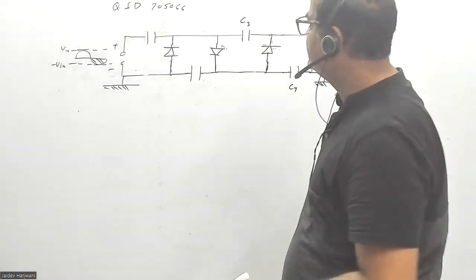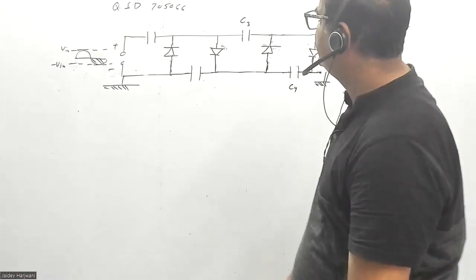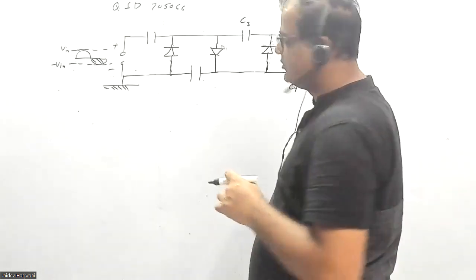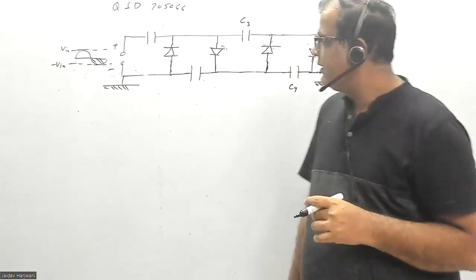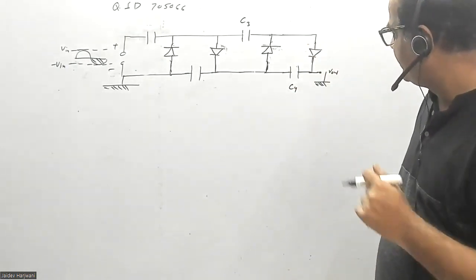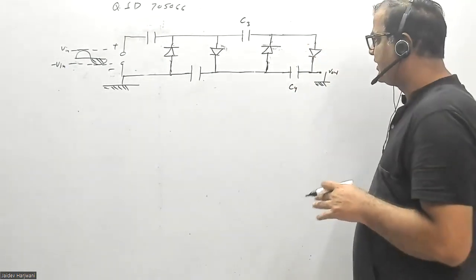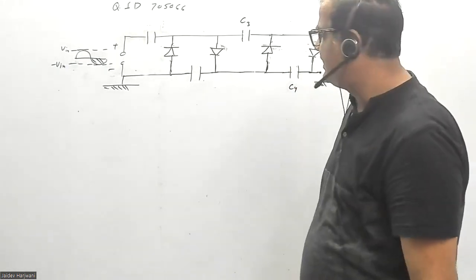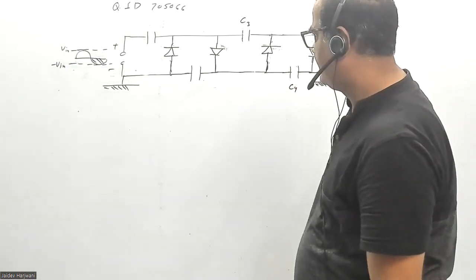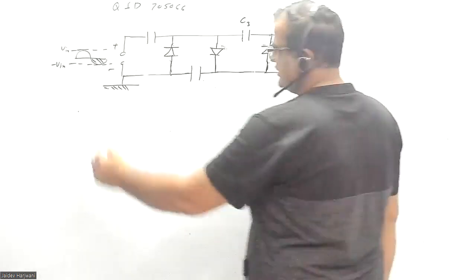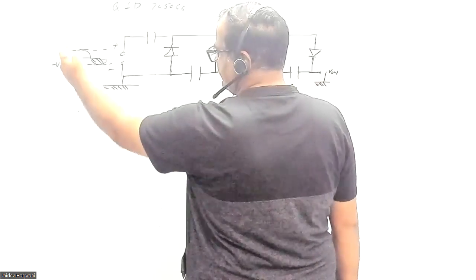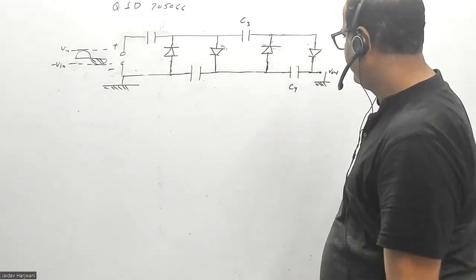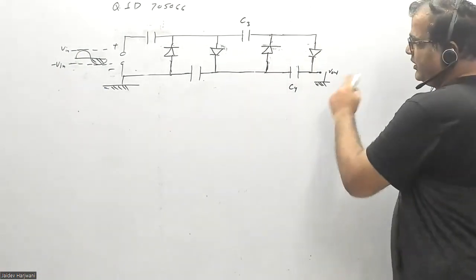Hello students, let us see this problem from CSIR net 2023. The question ID is 705066. I have redrawn the circuit so that you can familiarize. This is basically a voltage multiplier circuit. The input voltage has a peak value of plus/minus V input, and they are asking what is V output.